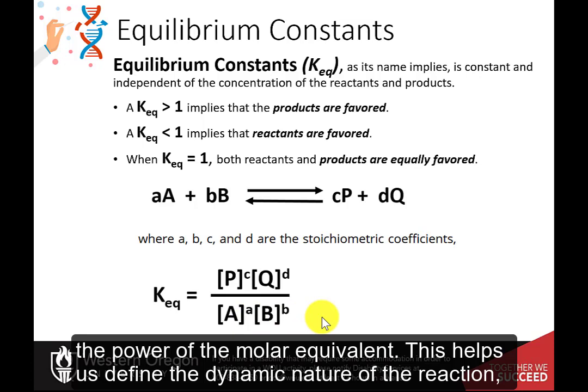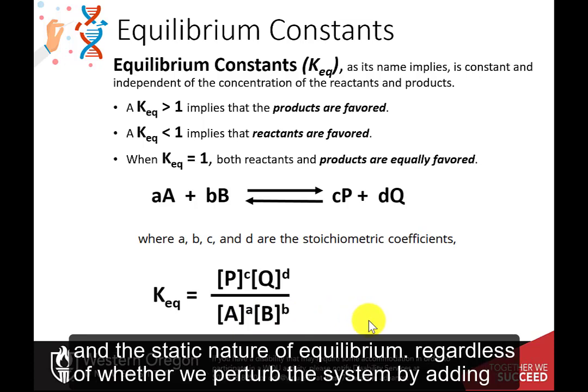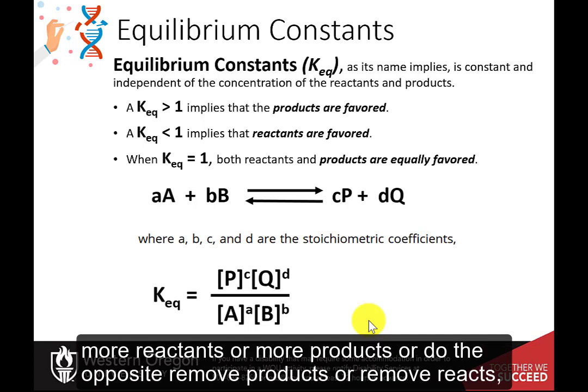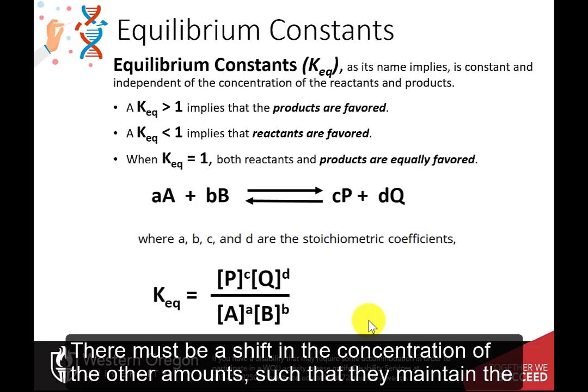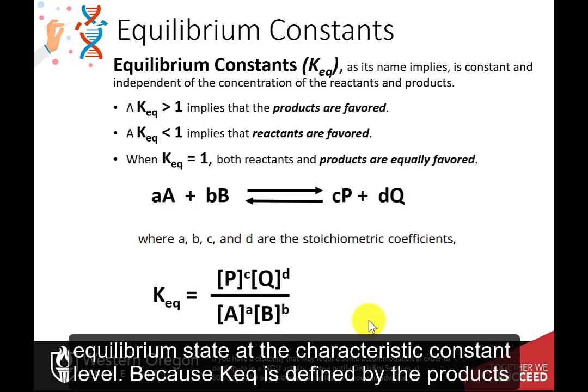This helps us define the dynamic nature of the reaction and the static nature of equilibrium. Regardless of whether we perturb the system by adding more reactants or more products, or do the opposite — remove products or remove reactants — there must be a shift in the concentration of the other amounts such that they maintain the equilibrium state at the characteristic constant level.